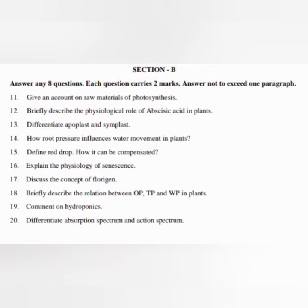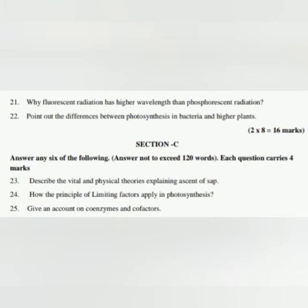Question 17: Discuss the concept of florigen. Question 18: Briefly describe the relation between OP, TP, and WP in plants. Question 19: Comment on hydroponics. Question 20: Differentiate absorption spectrum and action spectrum. Question 21: Why fluorescent radiation has higher wavelength than phosphorescent radiation? Question 22: Point out the differences between photosynthesis in bacteria and higher plants.